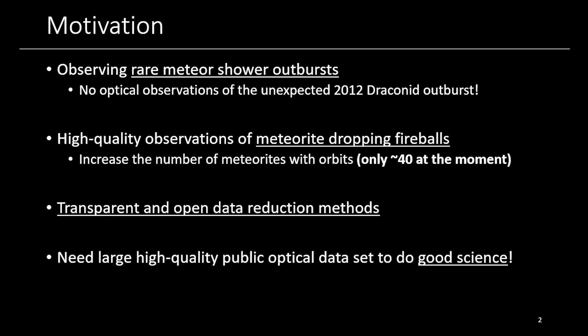We also need more high-quality observations of meteorite-dropping fireballs. At the moment, we have only about 40 meteorites with orbits out of thousands of found meteorites. Next, we need transparent and open data reduction methods. A couple of years ago, it became really obvious at one IMC that there's a lack of high-quality tools, and that's something we wanted to bring to the community. And finally, we need a large high-quality optical data set that is public so we can do good science.